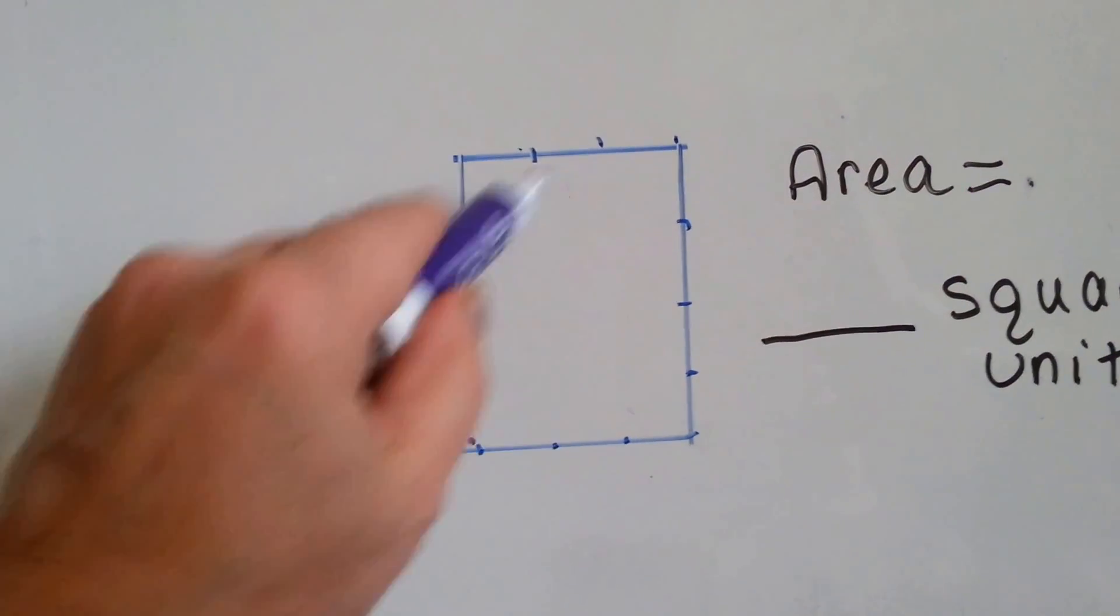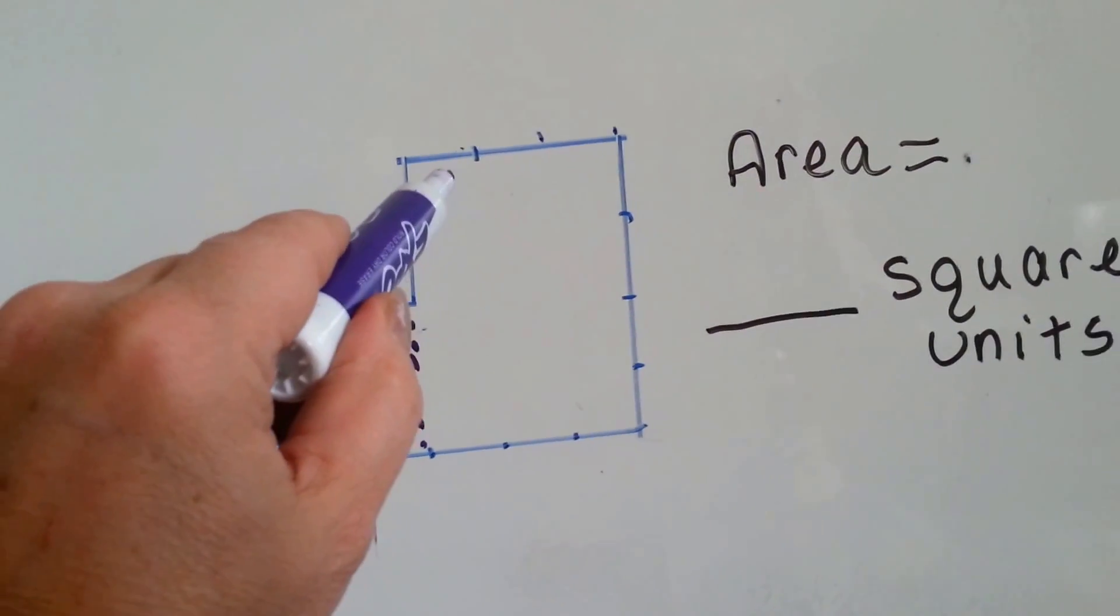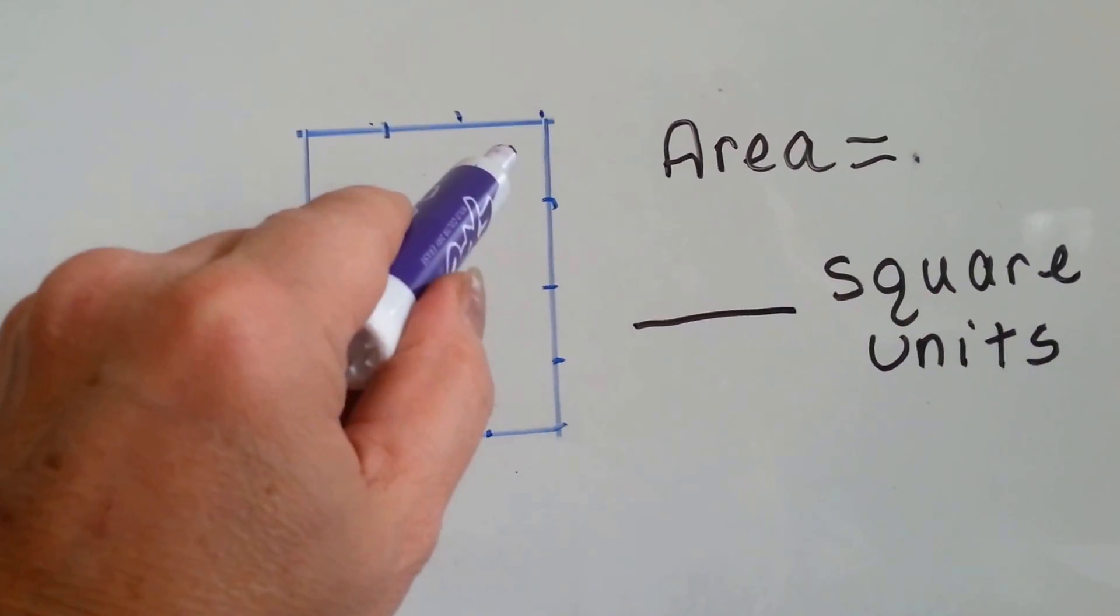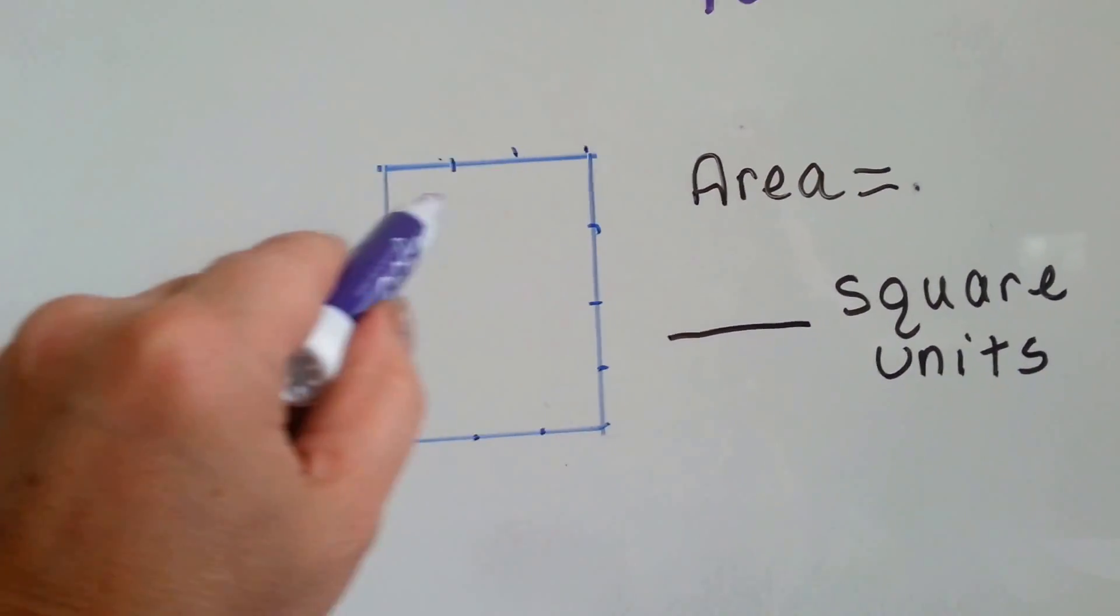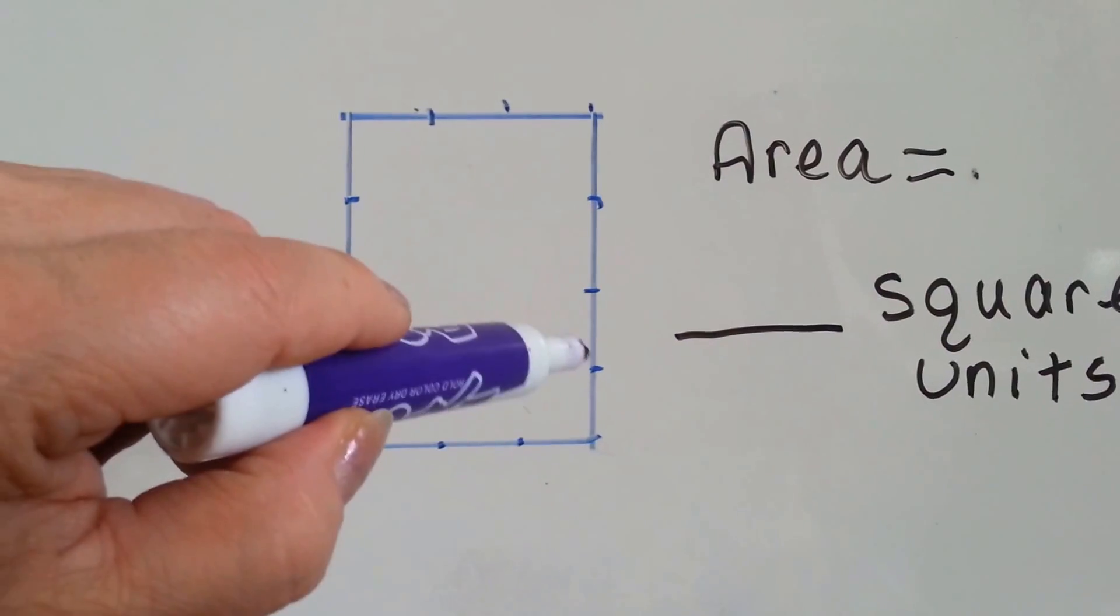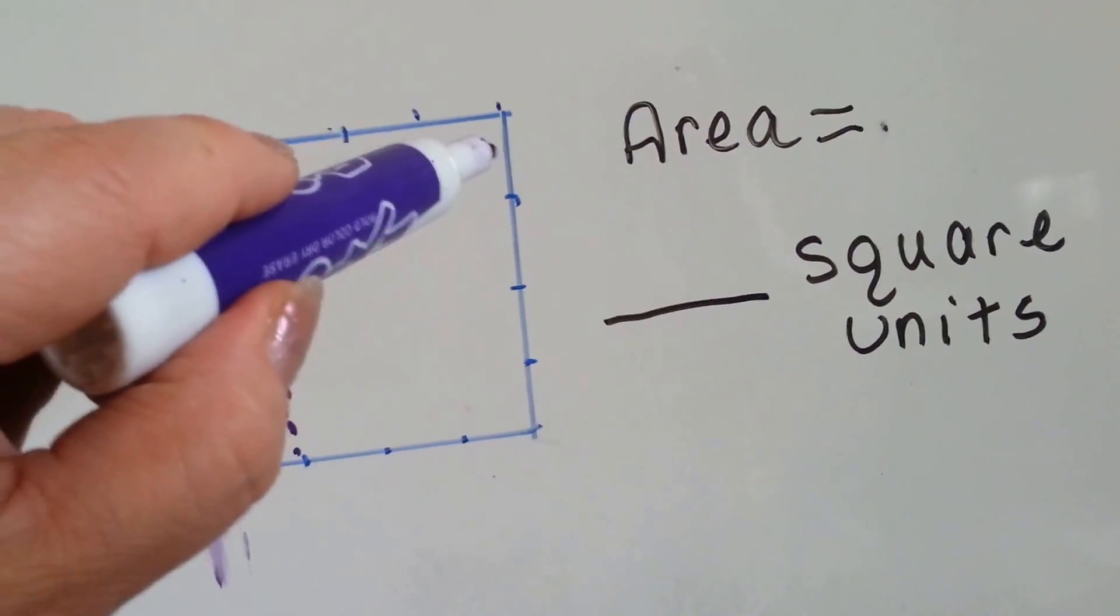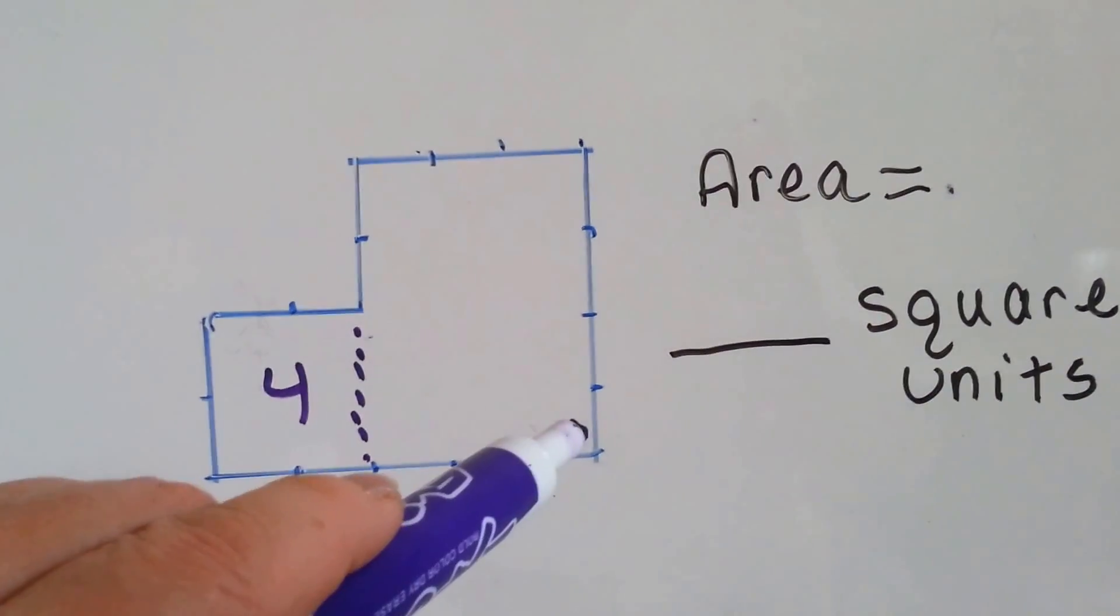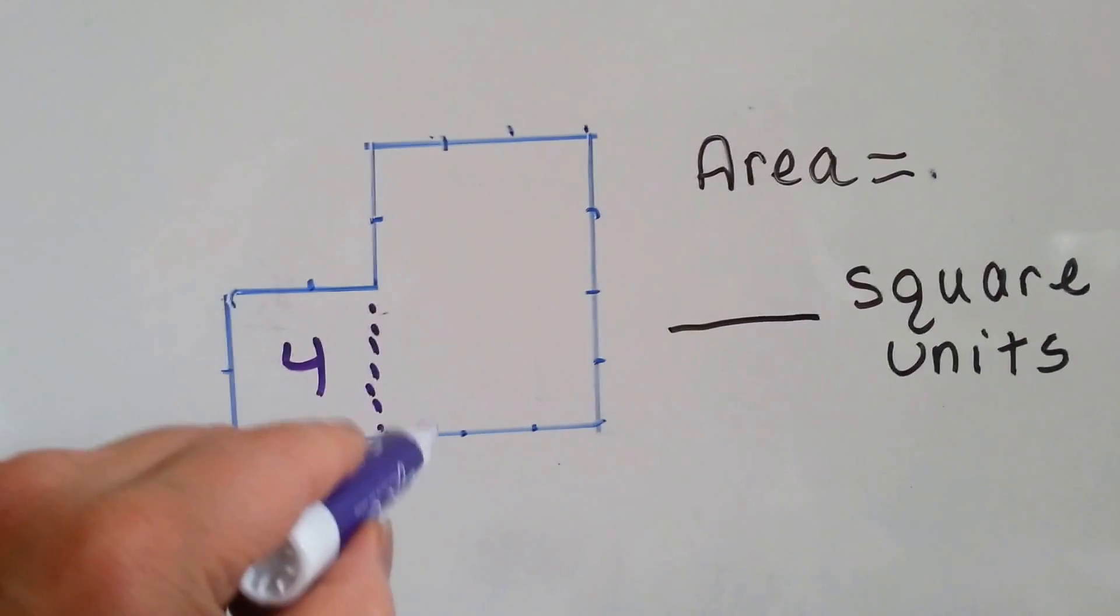And how many would be inside of here? There's 1, 2, 3 units. See the little dots? There's 3 units going across. And how many are coming up and down? 1, 2, 3, 4. 3 times 4 is? 3 times 4 is 12.